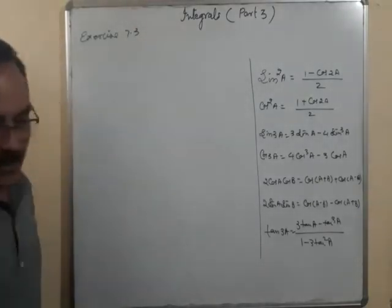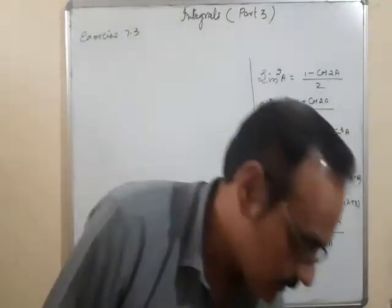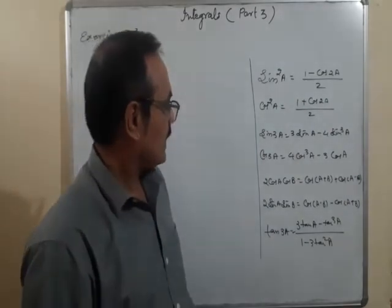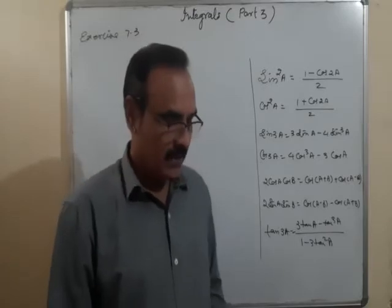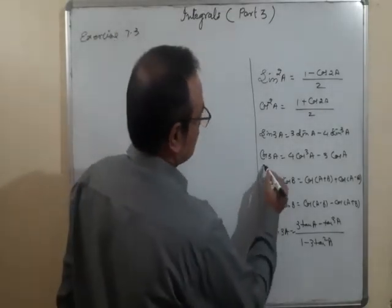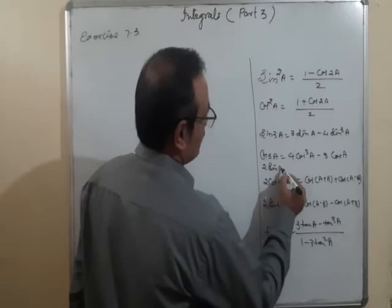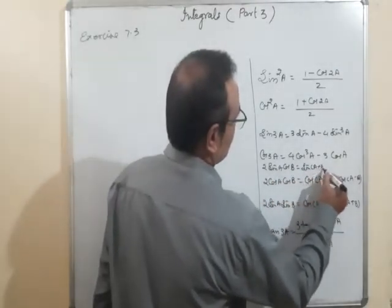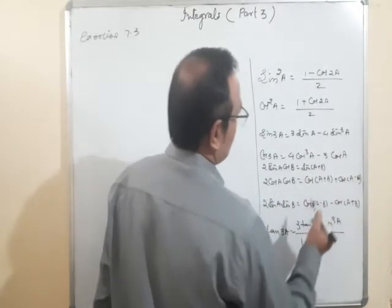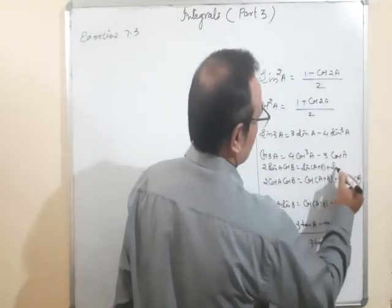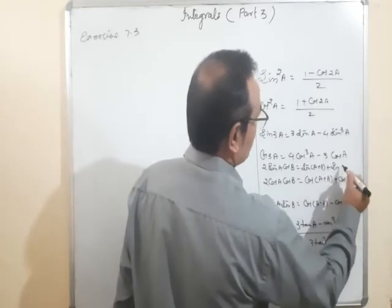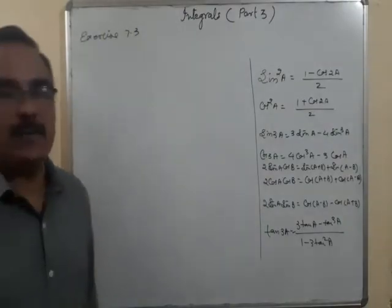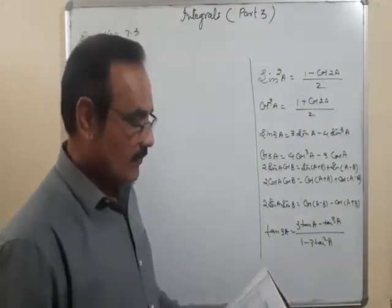After question 1, question number 2 involves sinA·cosB. The identity used here is 2sinA·cosB = sin(A+B) + sin(A−B). So 2sinA·cosB equals sin(A+B) + sin(A−B).